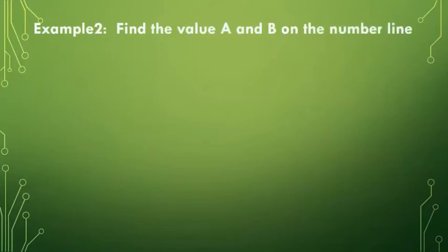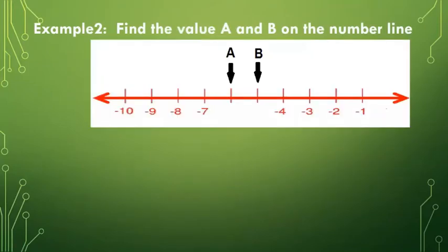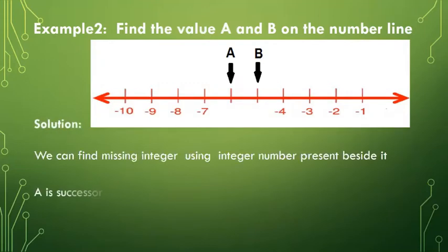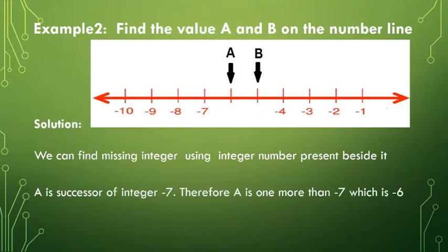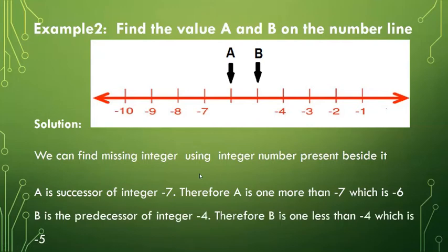Example two: find the value of a and b on the number line. Our solution: we can find the missing integer using the integer number present beside it. A is the successor of integer minus seven, therefore a is one more than minus seven, which is minus six. B is the predecessor of integer minus four, therefore b is one less than minus four, which is minus five.